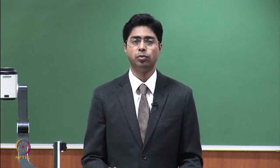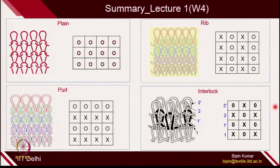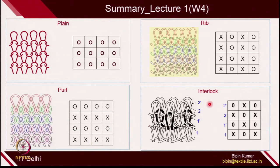Before we move on, in the last class I introduced 4 structural platforms on which you can create loop, tuck, and float stitches. Those 4 platforms popular in weft knitting are: plain, where you have either technical front or technical back loops on the surface; rib, a double jersey structure where in a course you find technical front and back loops alternately; purl, where alternating courses are technical front and back; and interlock, which is made from intermeshing of 2 ribs — one feeder system makes one rib structure and the other feeder creates another, combined in the same course.